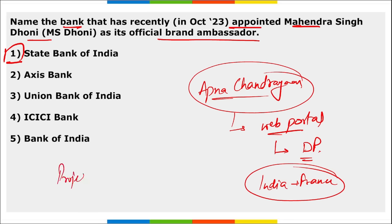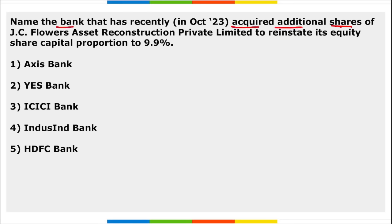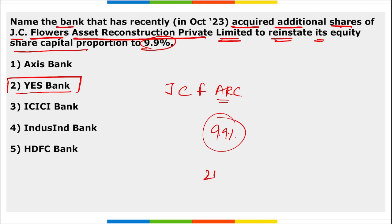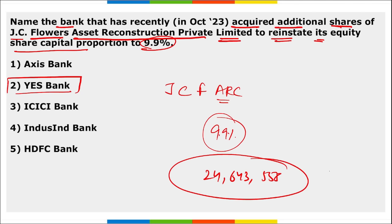Project Nilgiri Tahar is a project of Tamil Nadu. Yes Bank acquired additional shares of JC Flowers Asset Reconstruction Private Limited to reinstate its equity share capital proportion to 9.9%, representing the acquisition of 24,64,643,558 equity shares of JC Flowers at ₹29.68 per share.